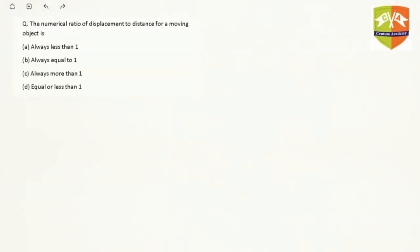Hi, in this question we have to find out the numerical ratio of displacement to distance for a moving object. Let's first define the two terms distance and displacement, and then we will look at the options.